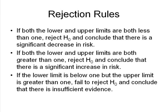Here are the three rules. If both the lower and upper limits are both less than 1, we reject H0 and conclude that there is a significant decrease in risk. If both the lower and upper limits are both greater than 1, we reject H0 and conclude that there is a significant increase because of the presence of the risk factor. If the lower limit is below 1 but the upper limit is greater than 1, then we fail to reject H0 and conclude that there is insufficient evidence. Now, we can remember that both of ours were below 1, so we'll use this first rule.